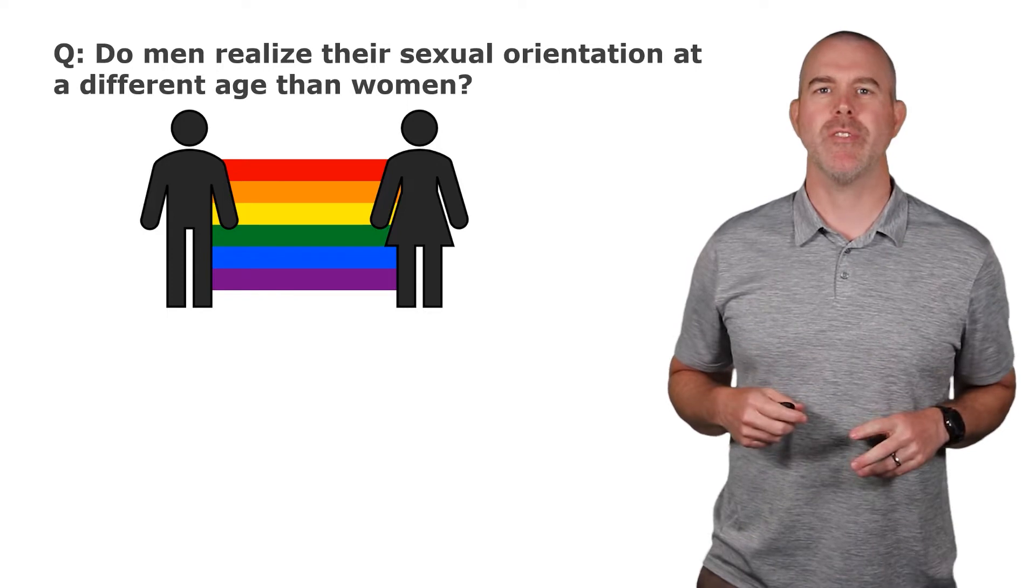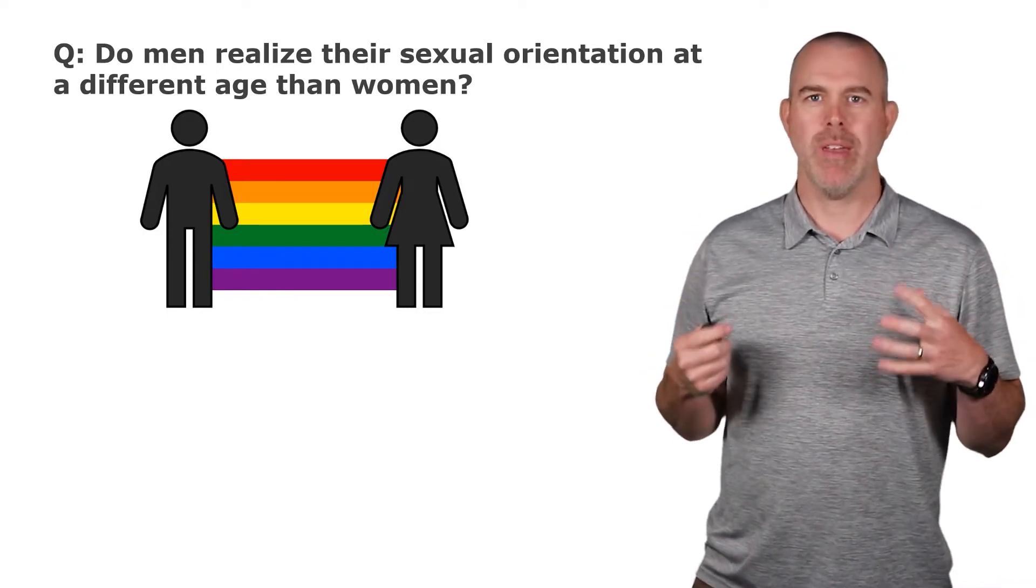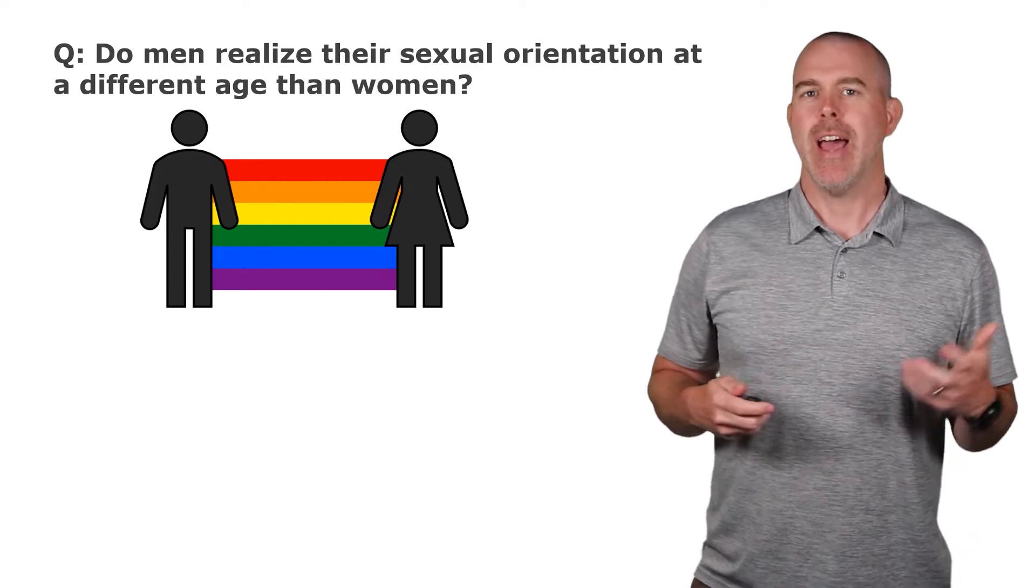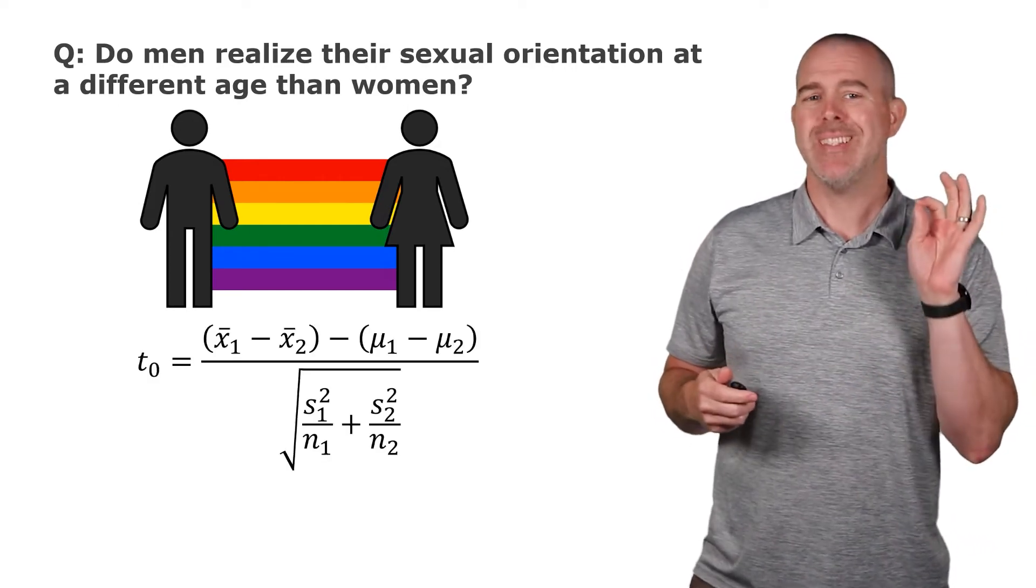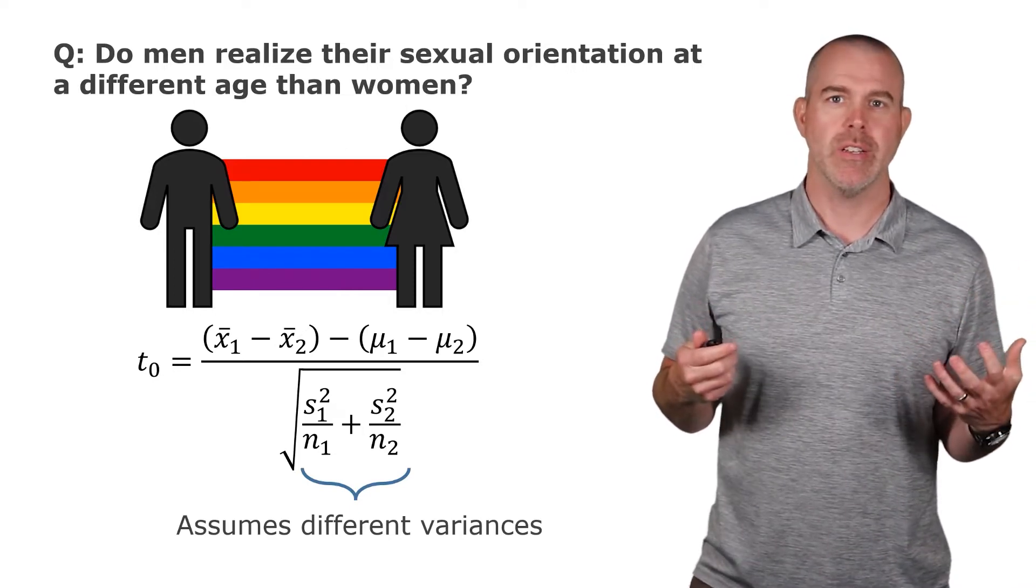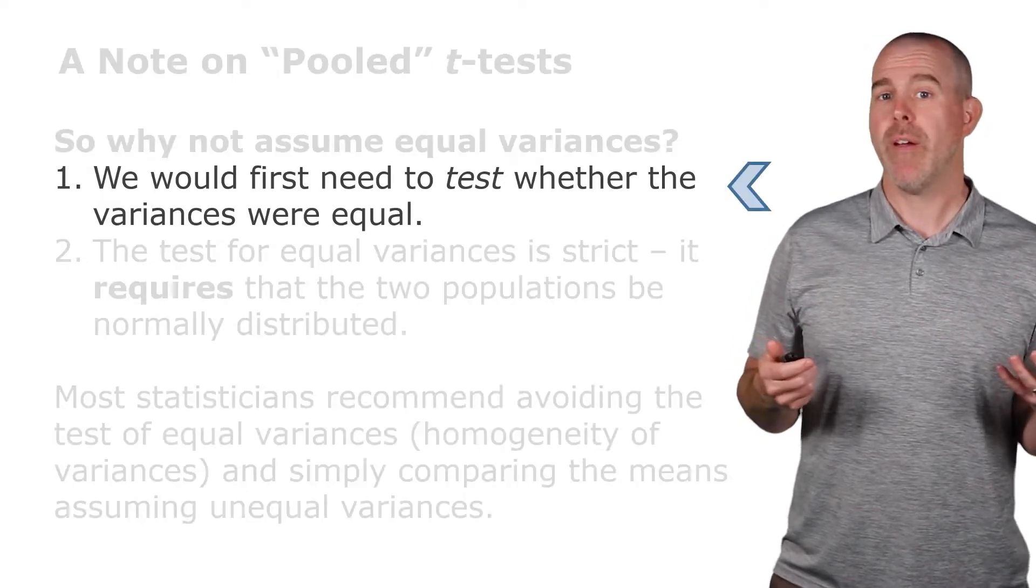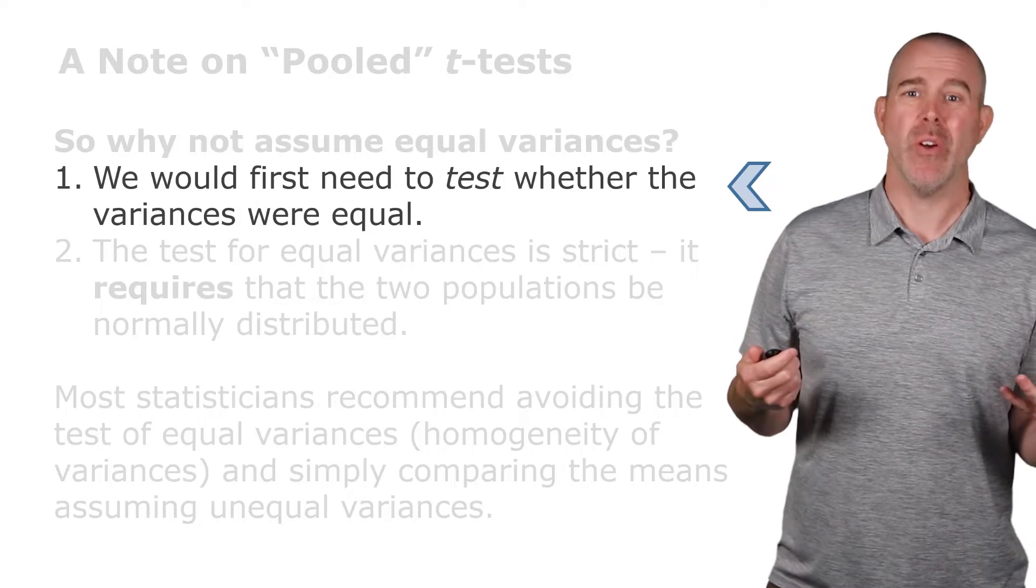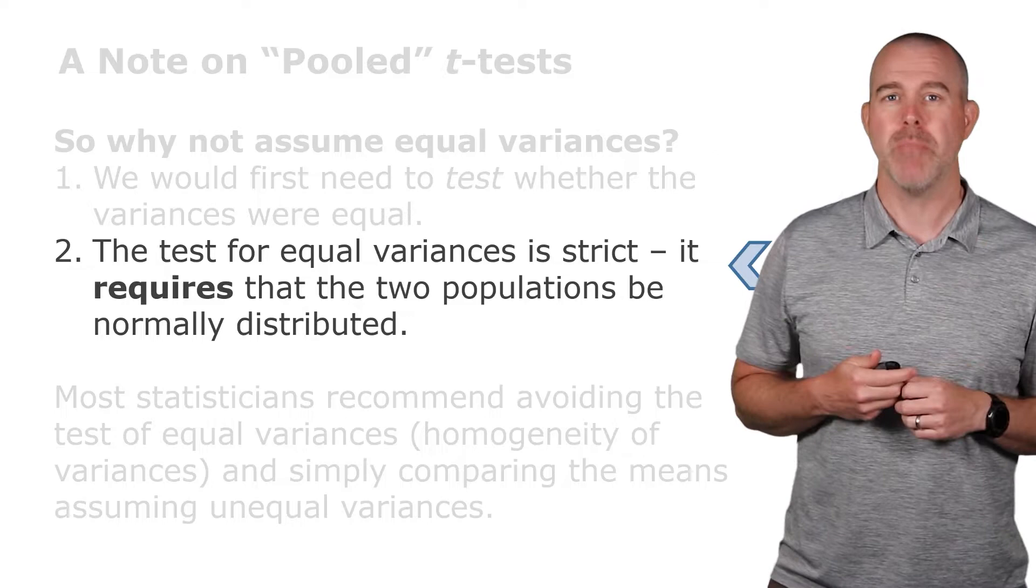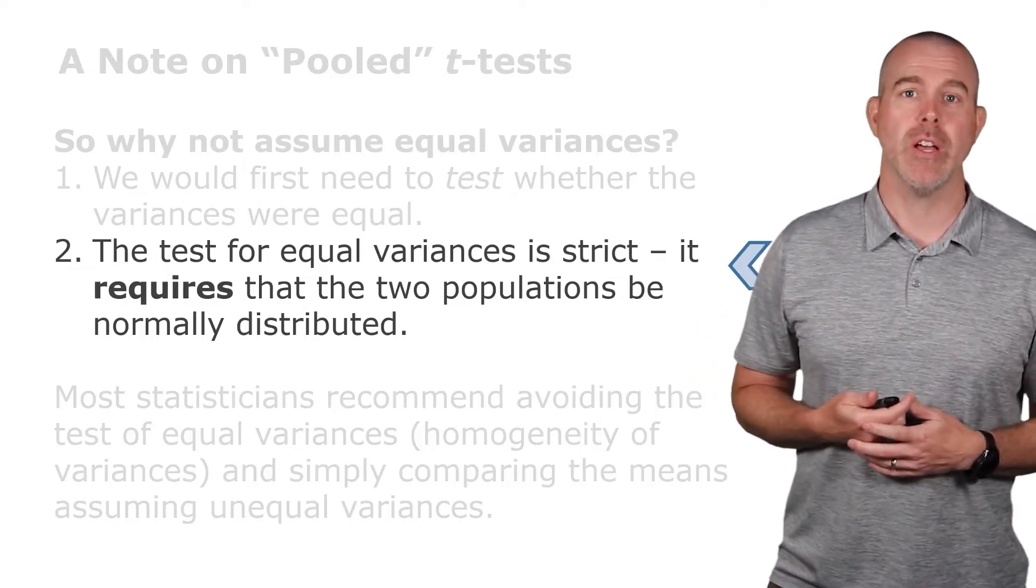Now, you might recall one of the previous videos we talked about the average age men or women realized their sexual orientation. This was in our LGB Life and Health database. I'll put that link in the description. You might not recall, though, there was this detail that with the test statistic, it assumed that the variances were different. And we talked about this pooled t-test where we could try to assume equal variances, but we'd have to test that first. And it's strict. There's some strict requirements here that the two populations must be normally distributed. Well, we're at that point now. That's the test we're going to look at in this video.